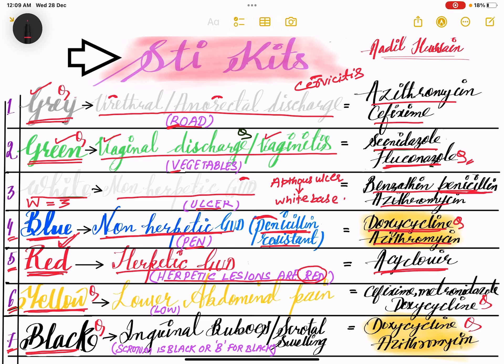The yellow kit contains cefixime, metronidazole, and doxycycline, and it is used for lower abdominal pain. Mnemonic: the word 'yellow' contains 'low' (L-O-W), and 'lower abdominal pain' also contains 'low' — remember it like this.